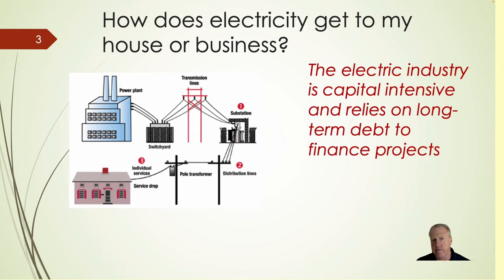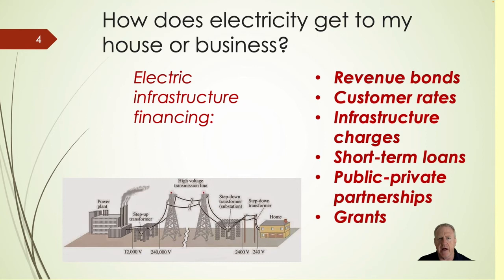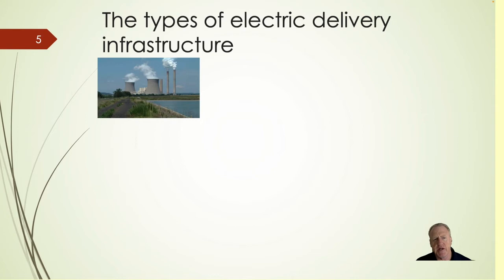Each one of those steps along the way is very capital intensive. The main level of financing that utilities use is long-term debt — specifically revenue bonds. Those revenue bonds have to be paid back through customer rates, or through what we call infrastructure charges. Sometimes you use short-term loans, public-private partnerships, or grants. In any case, there's a borrowing mechanism to fund the long-term infrastructure and a payment mechanism to get repaid through customer rates. We'll discuss this in later sections as we step up our analysis of the FERC uniform system of accounts.